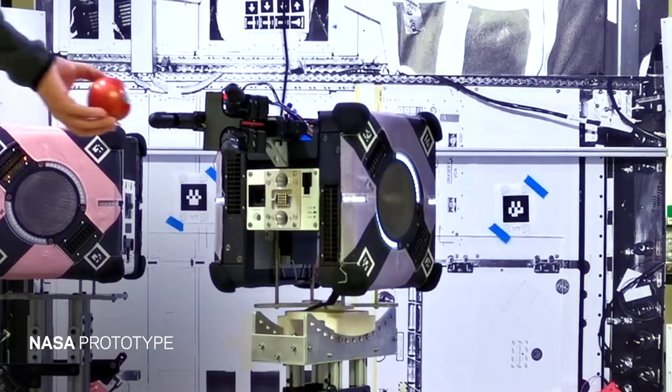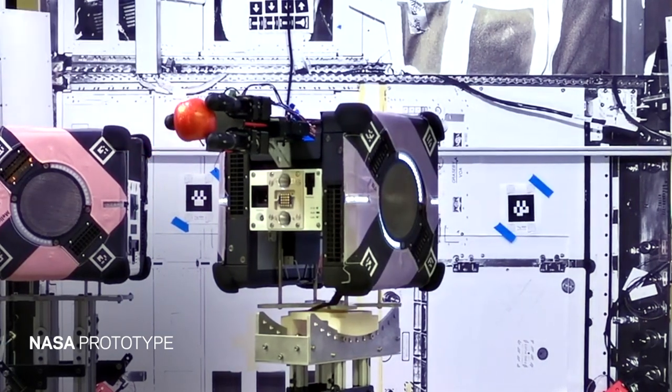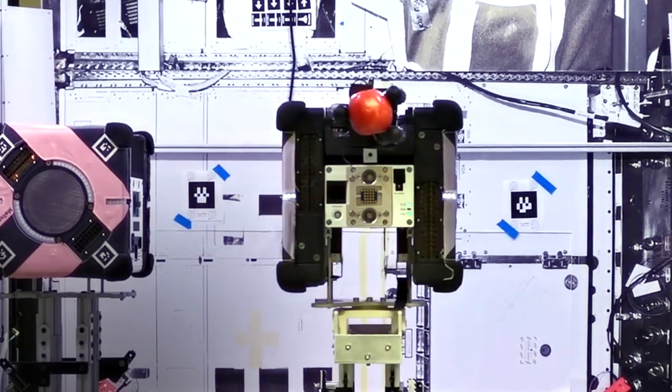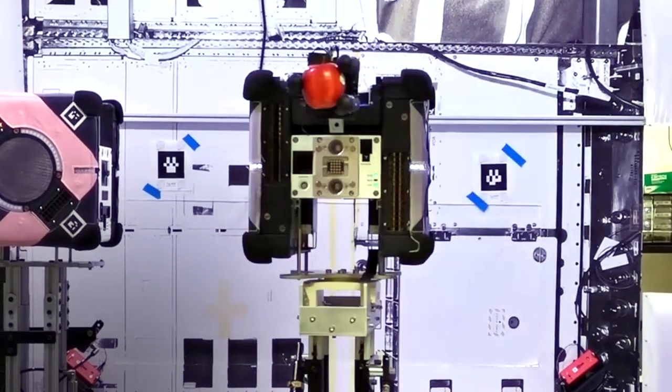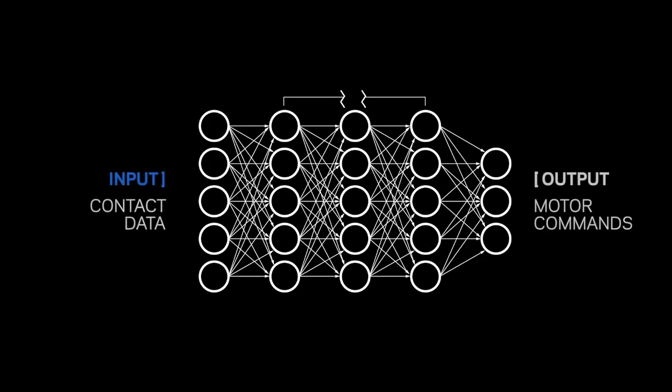And this is where we come to the big advances that we've seen in the last five years in the fields of machine learning and reinforcement learning. Some of these modern reinforcement learning techniques are really well suited for operating in situations where you have imperfect knowledge of the world.